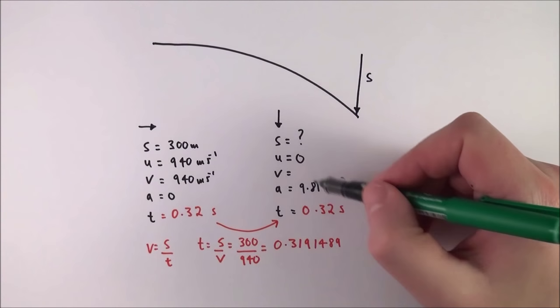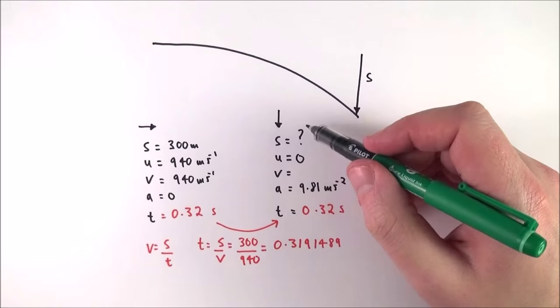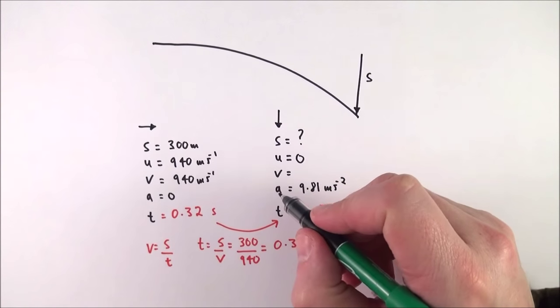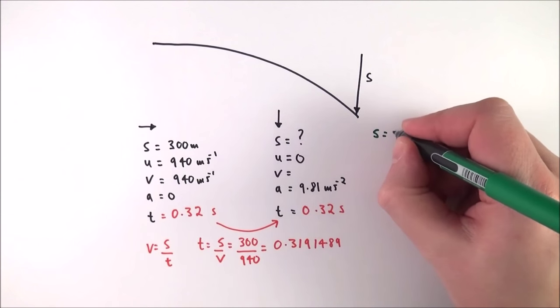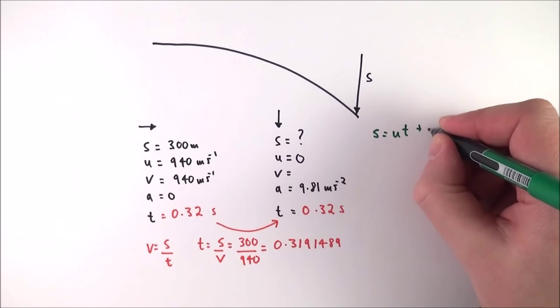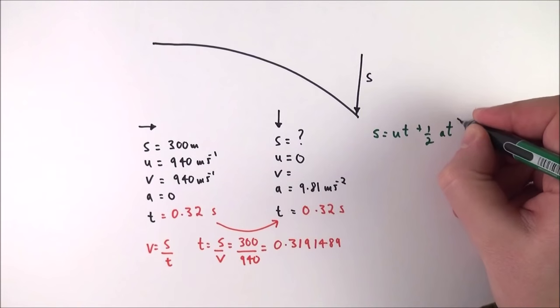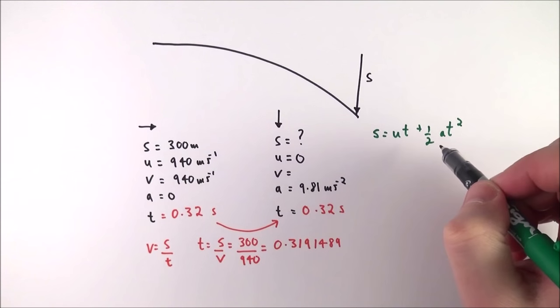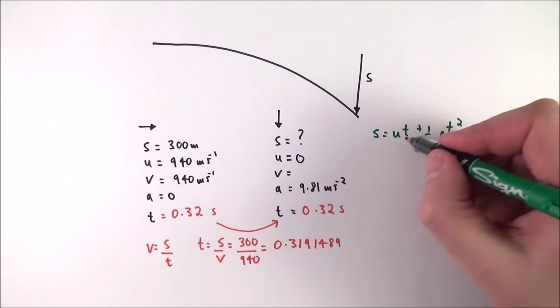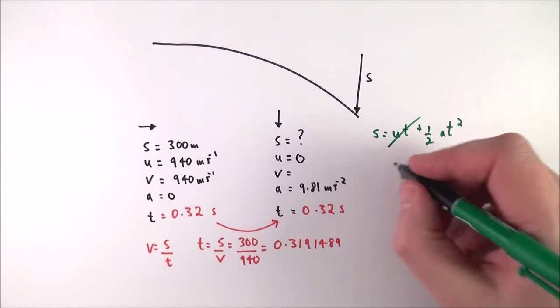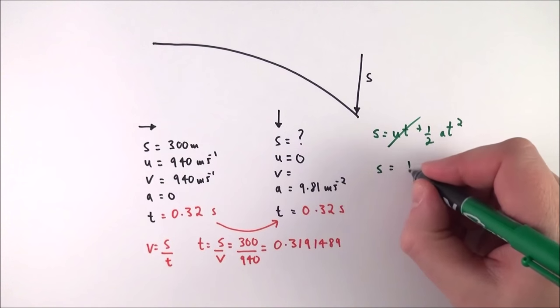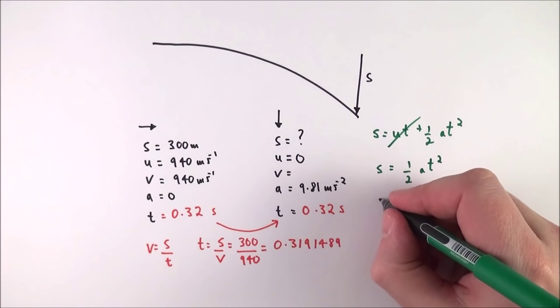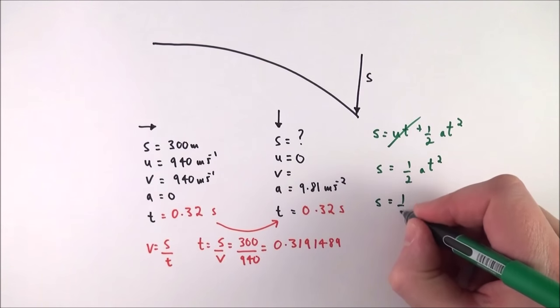Now the next step is, now I've got three known quantities I'm trying to find the fourth. I need to use a SUVAT equation that doesn't have a V term in it, and the one that I'm going to use is S is equal to UT plus a half AT squared, because I know U, I know T, and I know A. Now the good thing about this is often if U is zero then we can get rid of that first part of the equation and say that S is equal to a half AT squared.